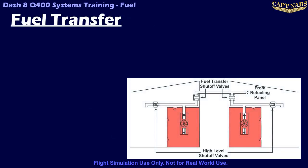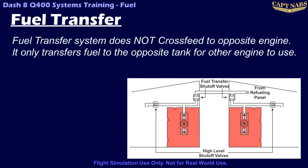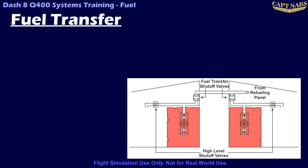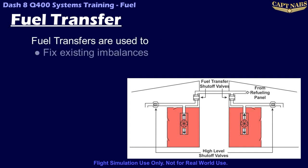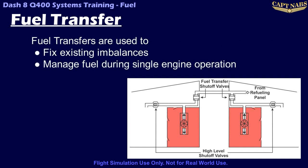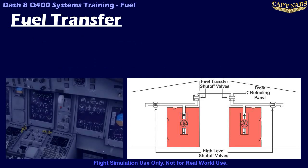Fuel can be transferred between the left and right wing tanks by use of the fuel transfer system. Note that fuel does not cross-feed into the opposite engine; in a fuel transfer, fuel is simply dumped into the other tank. Each engine can only be fed by fuel in its respective fuel tank. The fuel transfer system is used primarily to fix a fuel imbalance or manage fuel, especially during single engine operations, where a large fuel imbalance can grow very quickly.